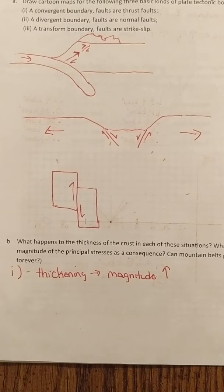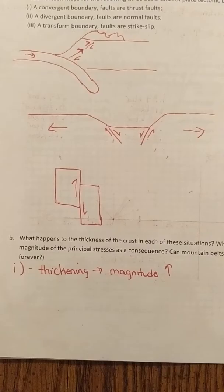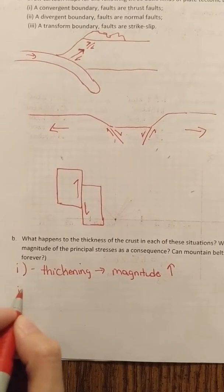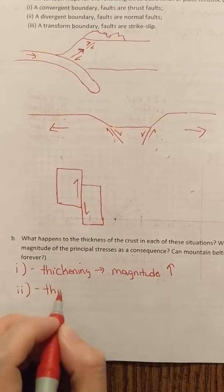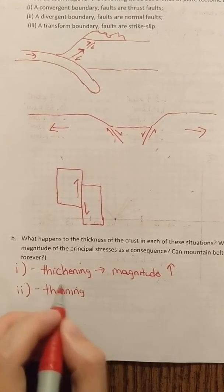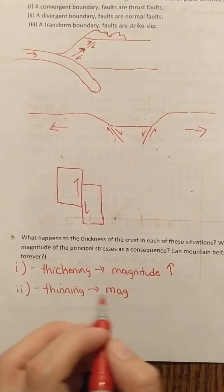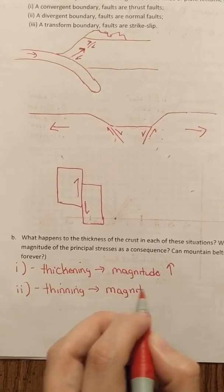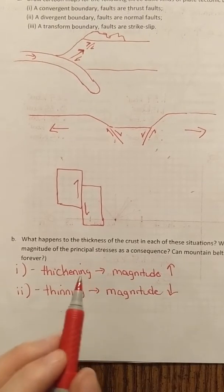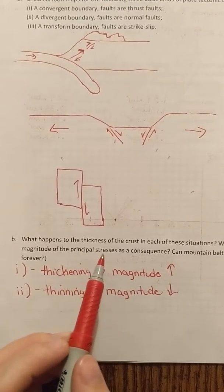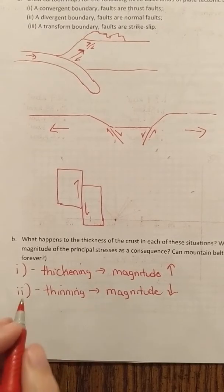Our second scenario, our divergent plate boundary, we are thinning the crust, which reduces the overall magnitude of our principal stresses. Right, there's less crust, we're thinning the crust. So there's less gravity, there's less mass for the gravity to pull down. It's also easier to pull crust apart than it is to push it together.